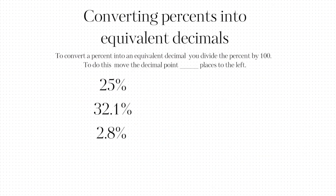Another skill you're going to need for this lesson is how to convert percents into equivalent decimals. To convert a percent into an equivalent decimal, you divide the percent by 100 — and to do this you move the decimal point two places to the left. So here we have 25%, which you can write as 25.0. To write it as an equivalent decimal, divide by 100 by moving it two spots to the left, and you can add a zero to the front — so that would be 0.25.